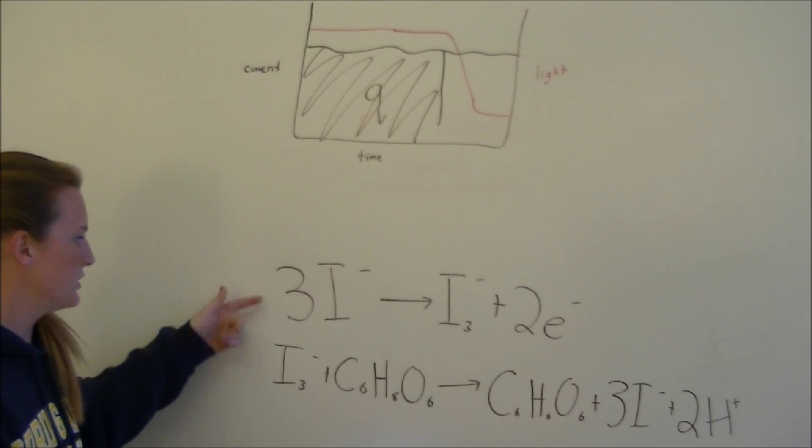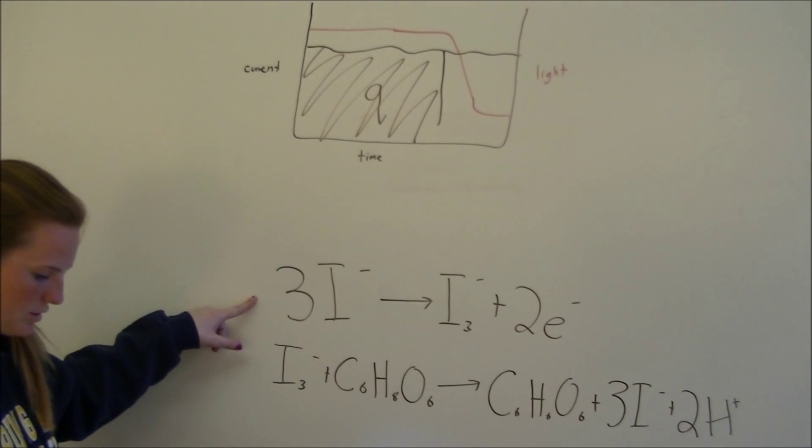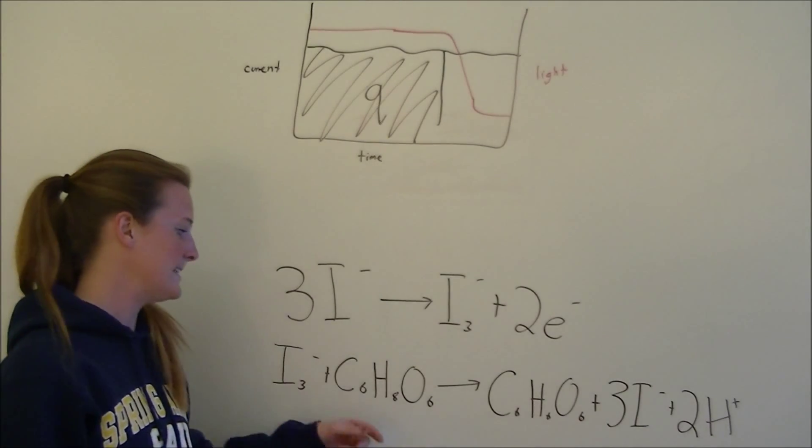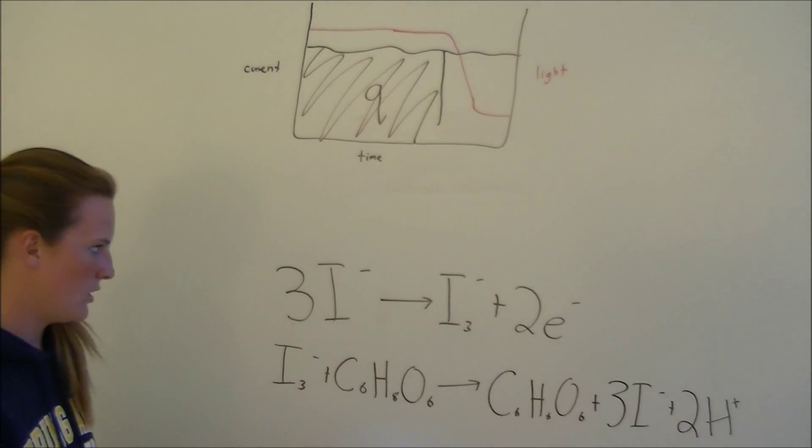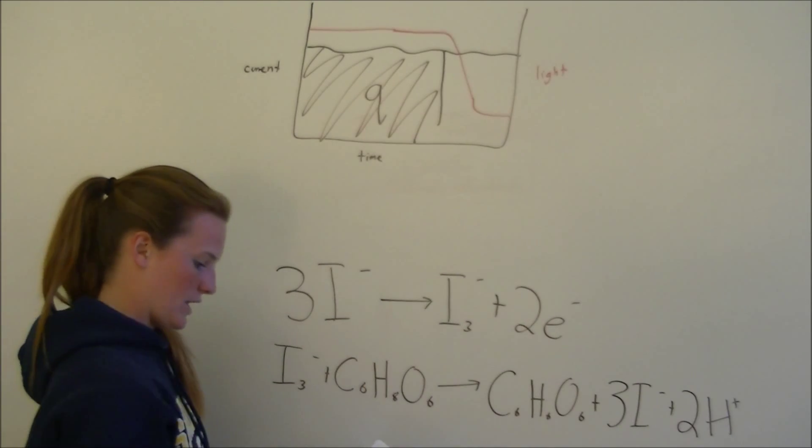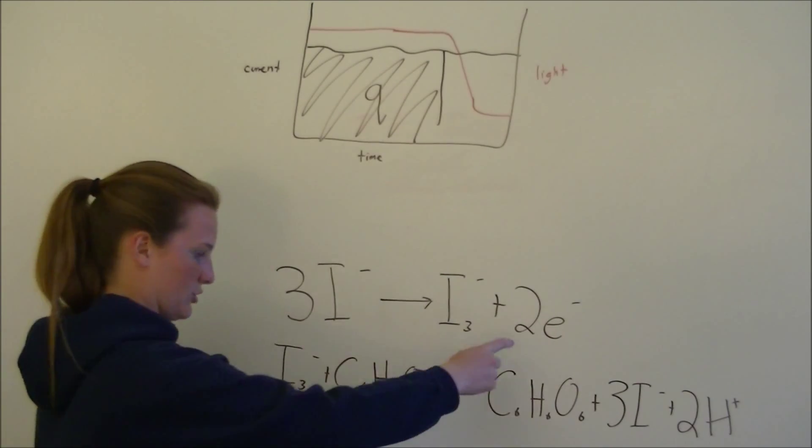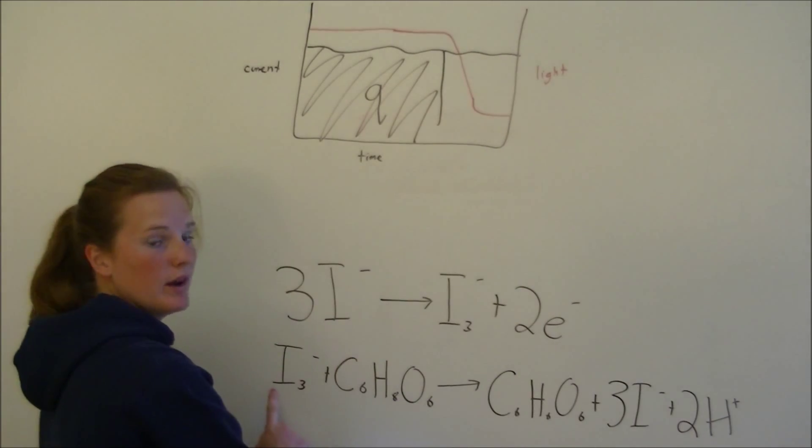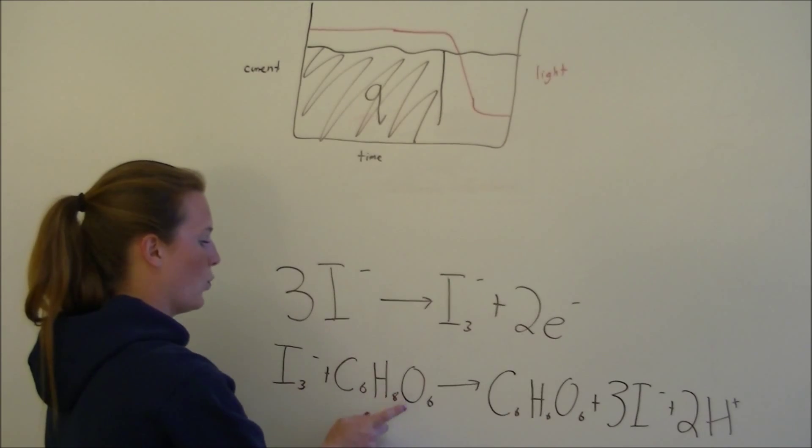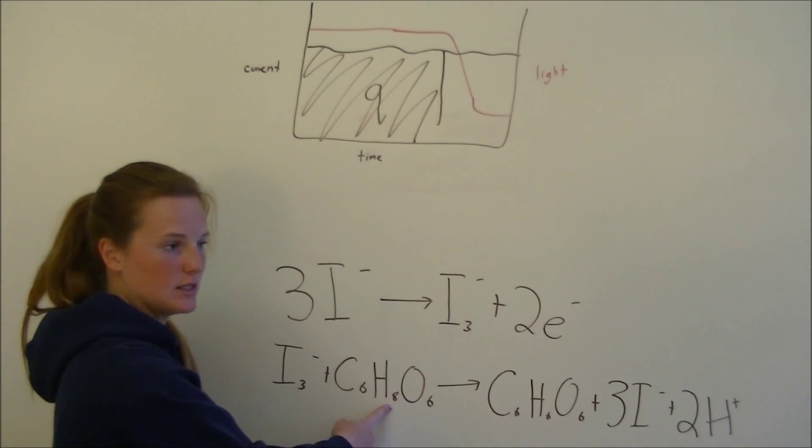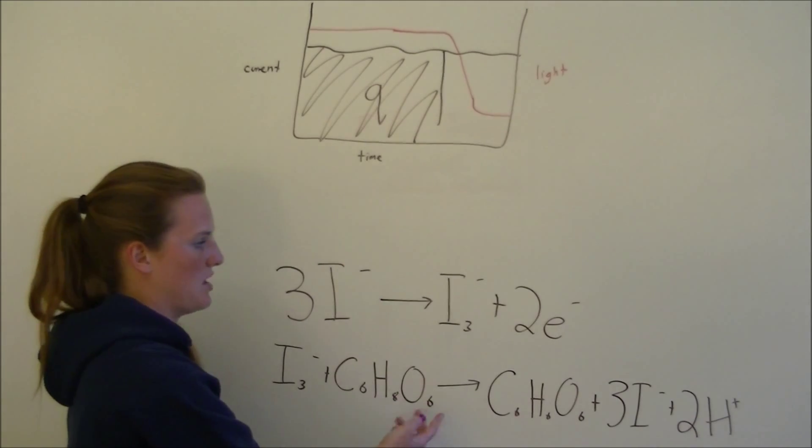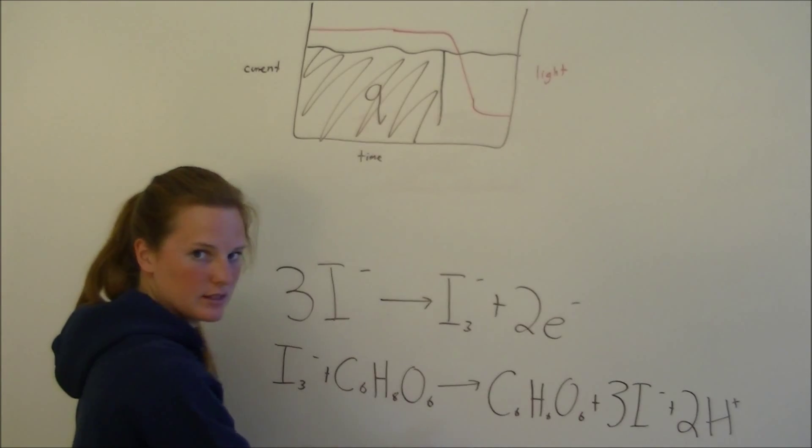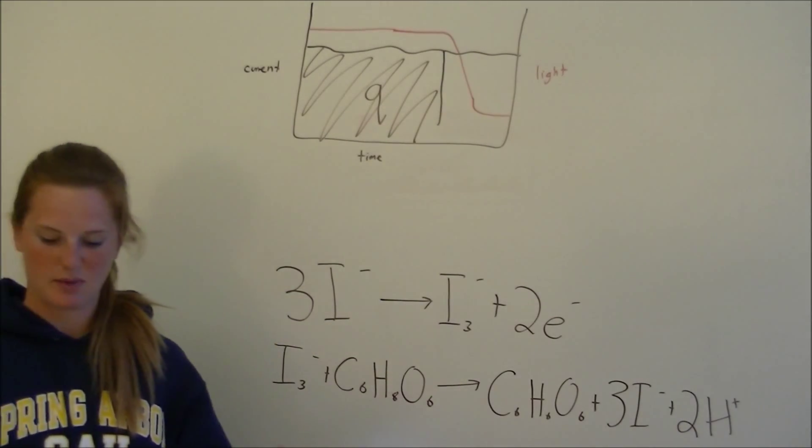Our fifth number: using these two equations, the oxidation of iodide and the titration of iodine and ascorbic acid, we can tell that for every two electrons transferred, one iodine is produced. So two electrons, one iodine. And then for every one iodine produced, one ascorbic acid is consumed.